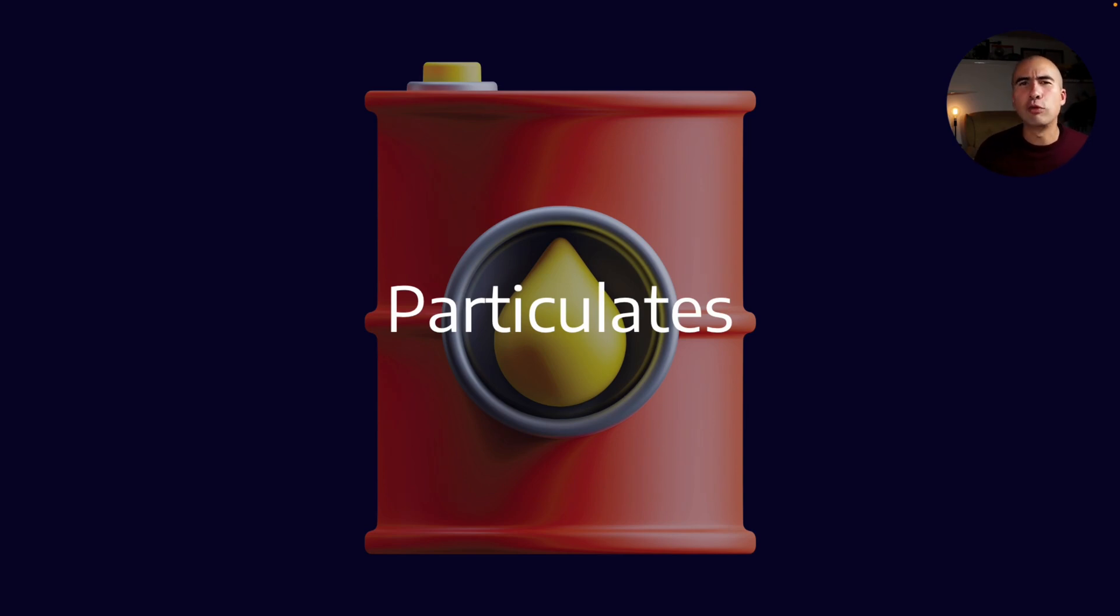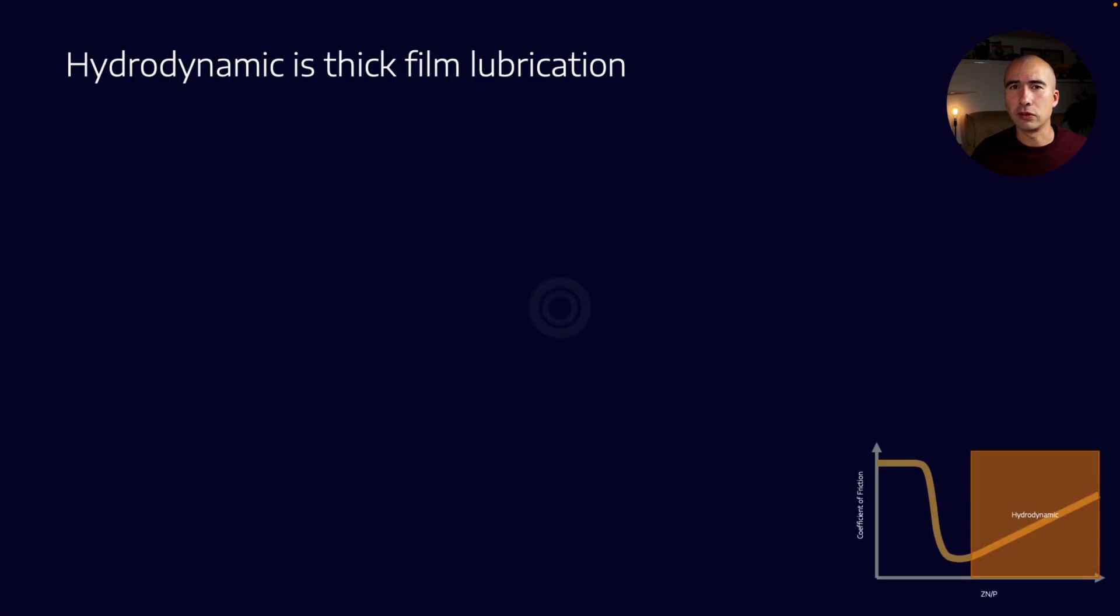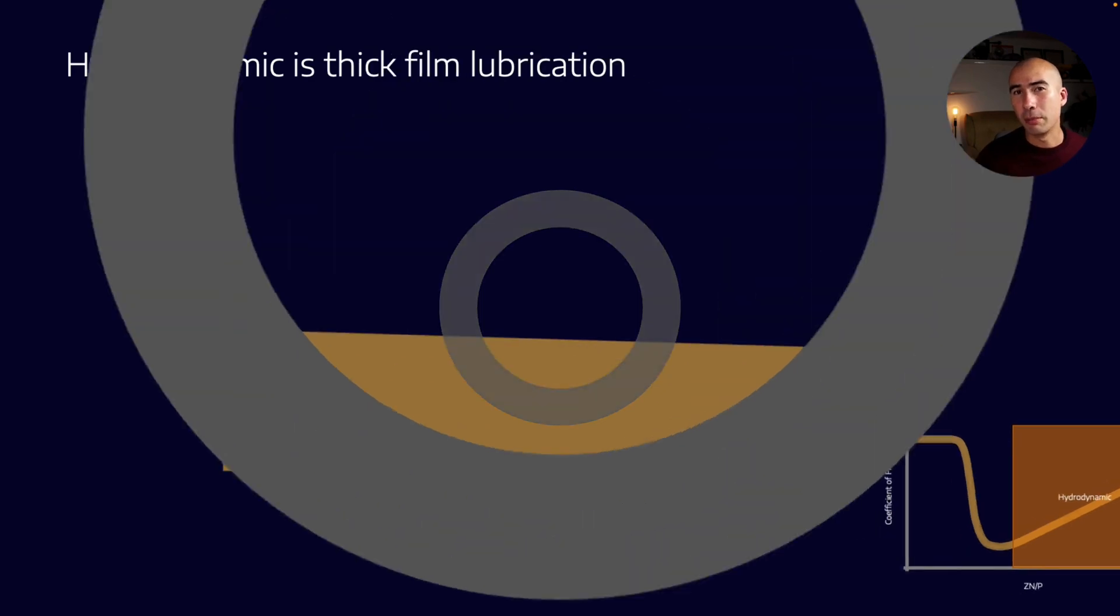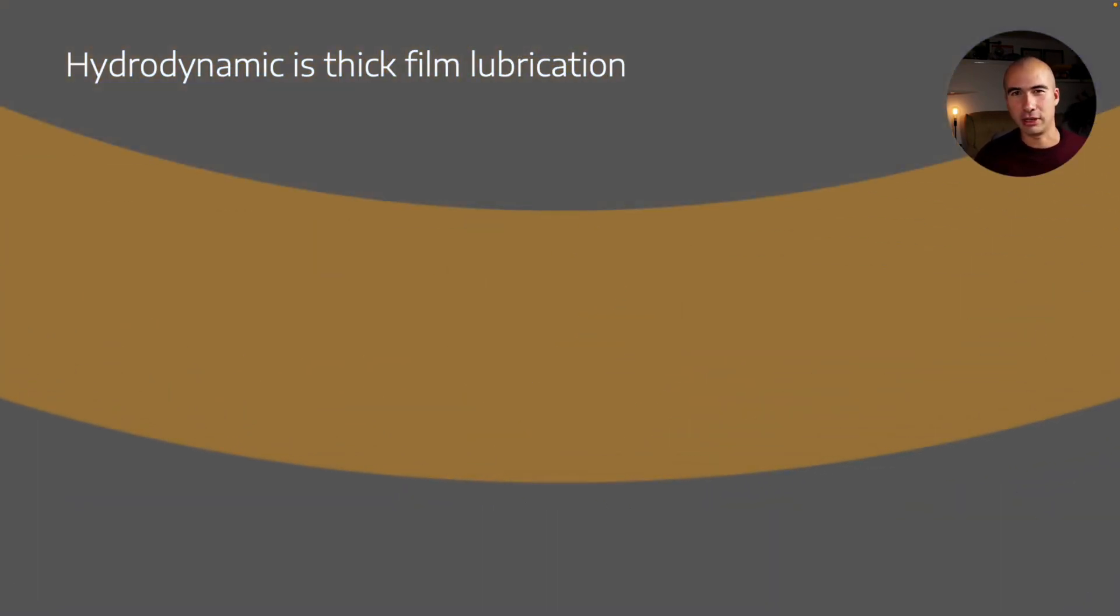Now particulates are reasonably easy to understand - it's physical matter that is causing erosion or some kind of abrasive wear. But why is it actually so important in lubricated components? Well, if we think about hydrodynamic lubrication, this is what we call thick film lubrication, but that thick film is not very thick at all. In fact, it's in the region of about 5 to 40 microns.